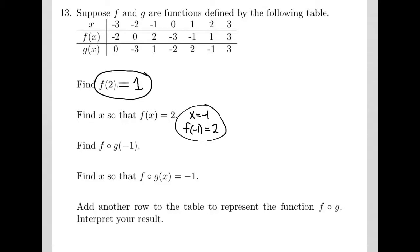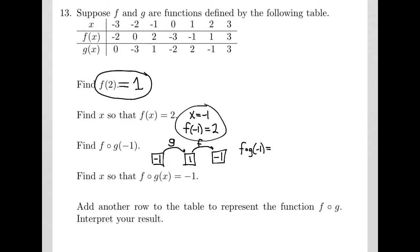The third question is a composition: f composed with g with an input of negative 1. Composition means the input goes into the rightmost function first. Negative 1 fed into g gives an output of 1. We now use 1 as the input for f and get an output of negative 1. So f composed with g of negative 1 equals negative 1.